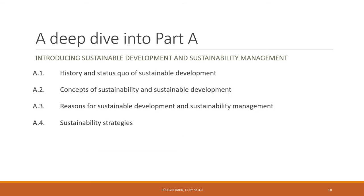Let's take a deeper look into Part A, which introduces sustainable development and sustainability management across four chapters. Chapter A1 covers the history and status quo of sustainable development. Chapter A2 is about concepts of sustainability, including different understandings and ways of defining it. Chapter A3 covers reasons for sustainable development and sustainability management — moral, ethical, and business reasons. Chapter A4 is about three core strategies: eco-efficiency, eco-effectiveness, and sufficiency, along with their limitations and drawbacks.